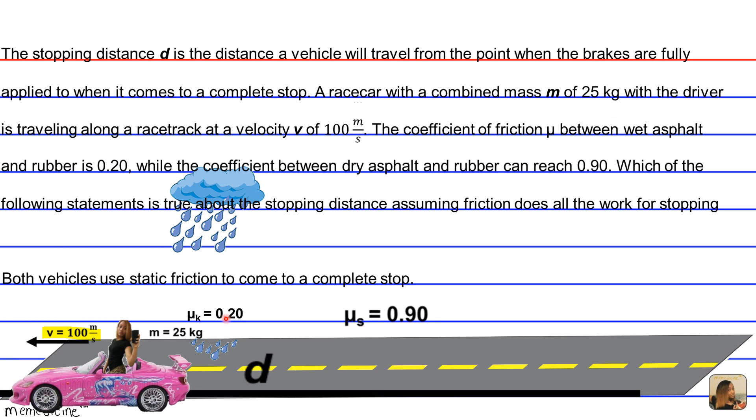Would it be C, both vehicles use static friction to come to a complete stop? Or would it be D, the calculated stopping distance is 4.5 times greater for a race car on wet asphalt than on dry asphalt?